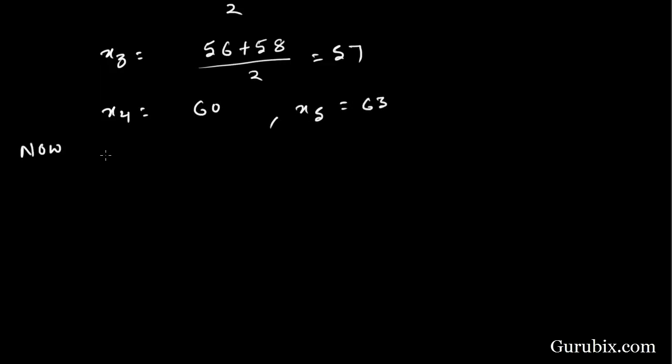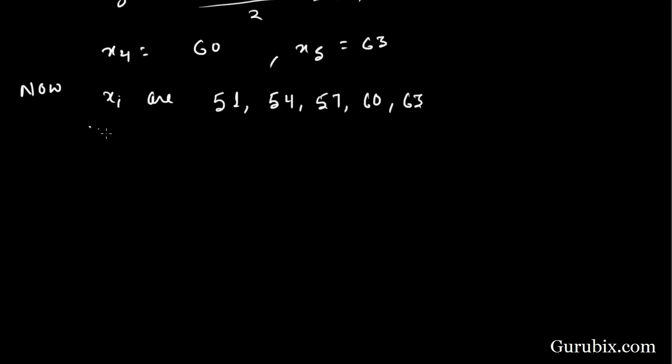Now, our xi's are 51, 54, 57, 60, 63. Let assume a mean and denote it by a which is the midpoint of xi. Here, midpoint of xi is 57. So a equal to 57.